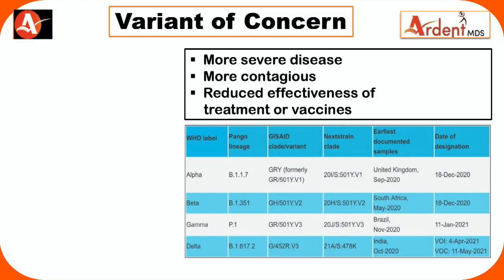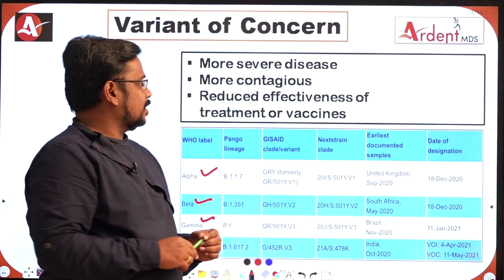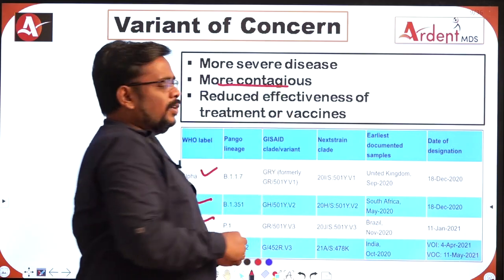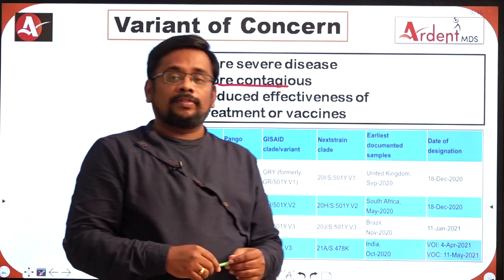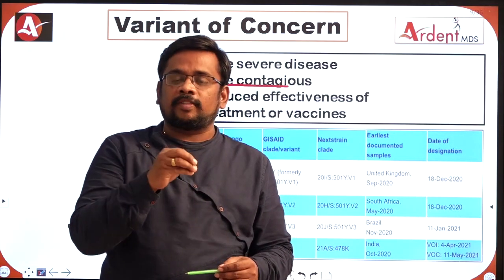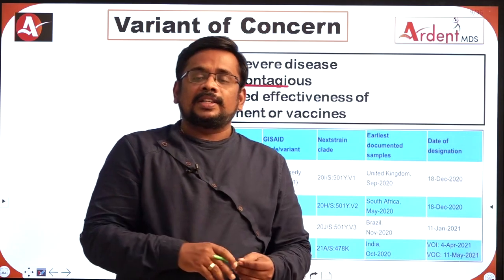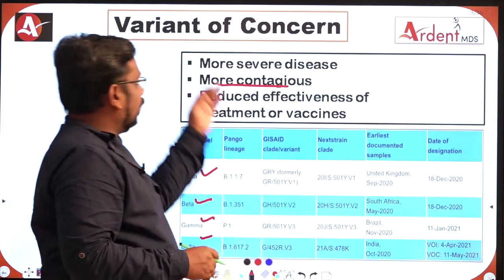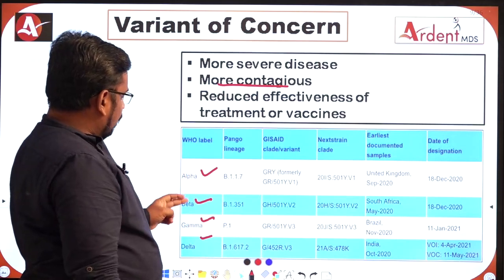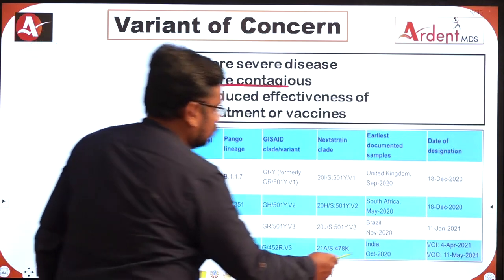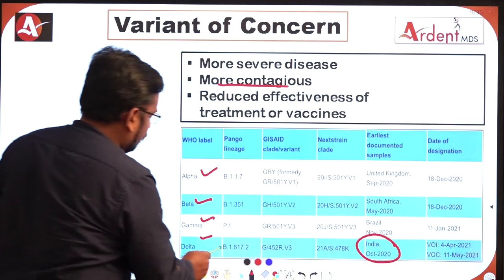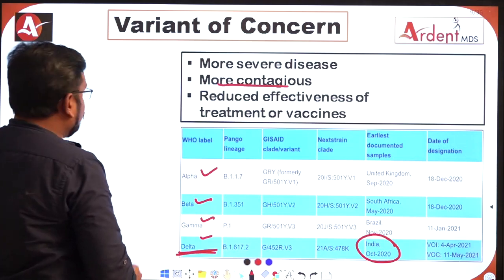Variant of Concern — as the name says, it is a real concern. Alpha, Beta, Gamma, Delta all come under Variant of Concern. These produce more severe disease, are more contagious, and vaccines are less effective against them — antibodies produced by the vaccine or by previous infections are not as effective. Among Alpha, Beta, Gamma, Delta, the variant present in India is Delta.